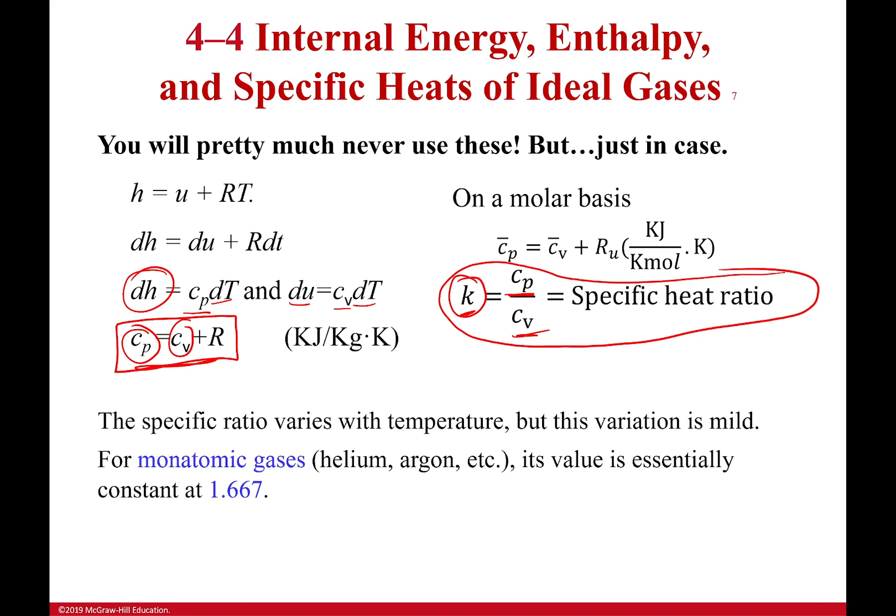So, for monatomic gases like helium, argon, it's typically around 1.667. For diatomic gases, including air, because air is mostly made up of diatomic gases, it's 1.4. That's at room temperature, though. It does change as you get to higher temperatures, but for us and what we're dealing with, it's typically about this.